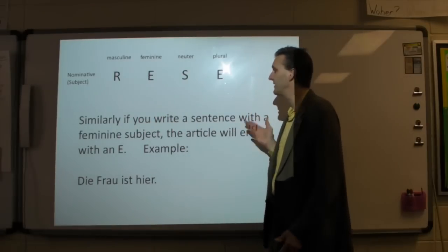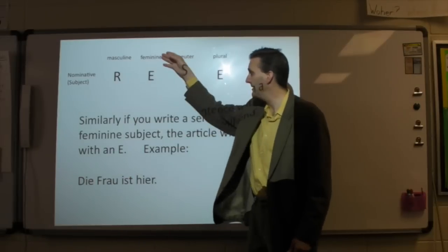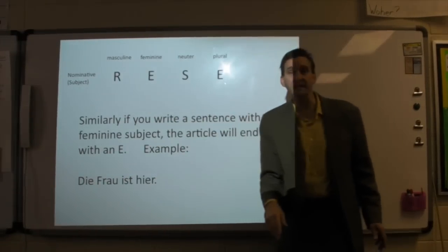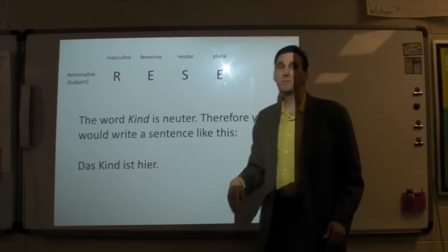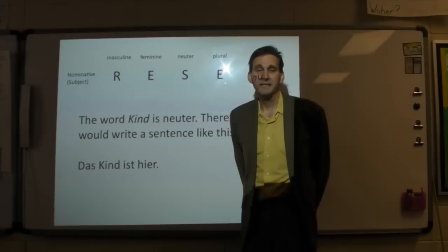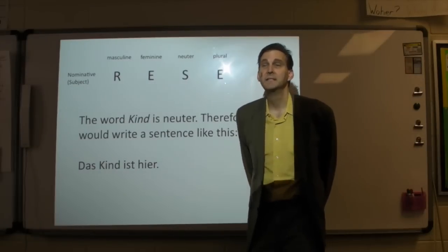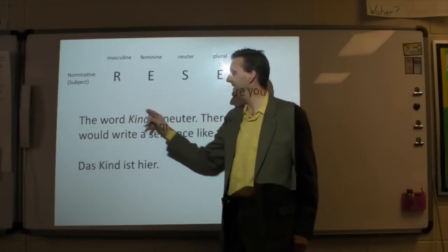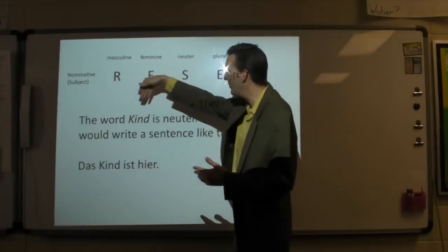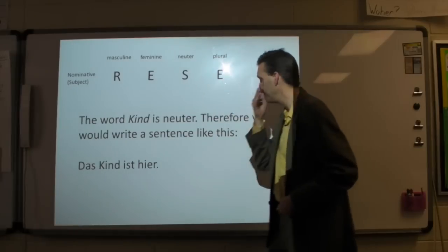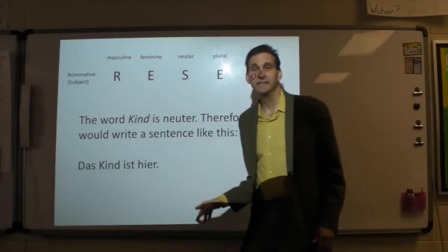Similarly, if you write a sentence with a feminine subject, the article will end with an E. Frau, as we know, is feminine. So die — where is the E there? Die Frau ist hier. Now, the word Kind is neuter. Some people have a problem with that — the fact that a child is neuter. Don't think of a child as being neuter; think of simply the word Kind. Just this word Kind is a neuter word, so it has nothing to do with the fact that it's a child. Because Kind is a neuter word, we need an S in here: das Kind ist hier.